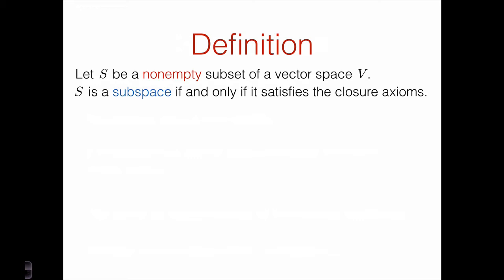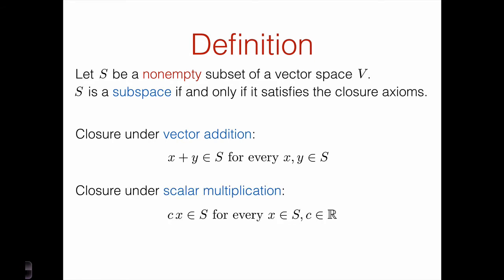Just as in the case of Rn, a subspace of a general vector space V is a non-empty set that's closed under vector addition and scalar multiplication. So we have some non-empty set S that's a subset of some vector space, and for every two elements x and y in S, the sum x plus y is also in S. And also for every element x of S and every scalar C, C times x is also in S.